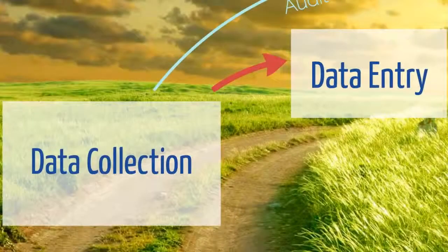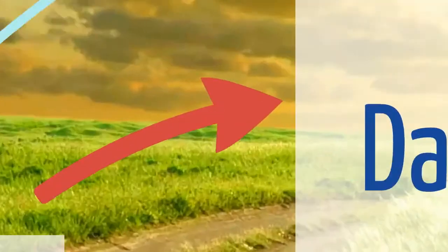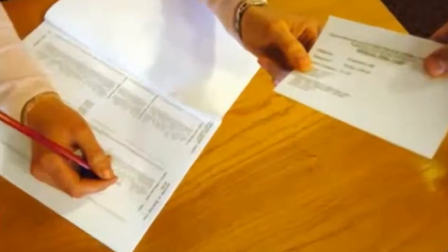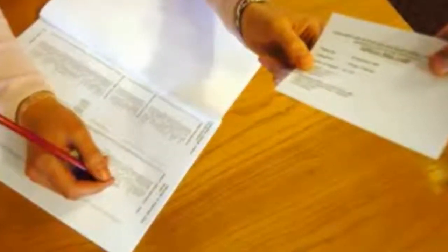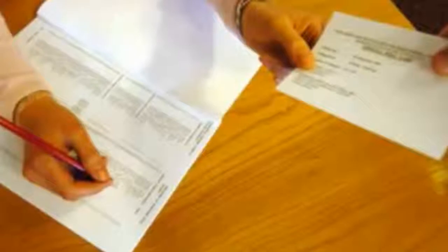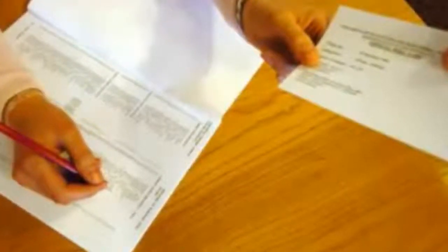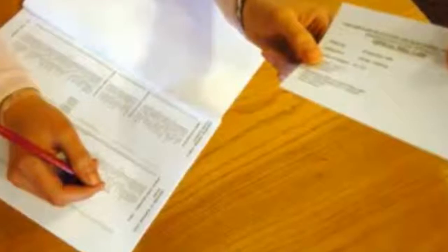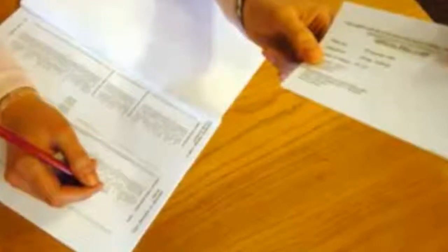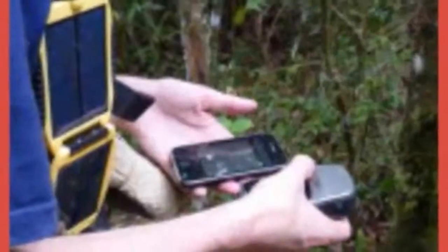If the activity involves paper questionnaires or field reports, checks need to be put in place to ensure all of the questionnaires or reports are handed into the office. A simple logging-in process can be implemented to help with this. For electronic data, checks need to be conducted to ensure all of the files have been transferred and are not corrupted.